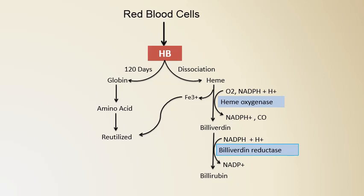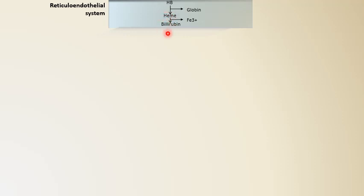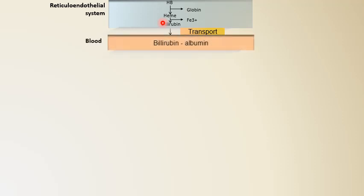Now we will see how bilirubin gets transported. Bilirubin is synthesized inside the reticuloendothelial system and is sparingly water soluble, requiring a specific transport protein. Albumin binds to bilirubin and transports it from peripheral tissues to the liver.